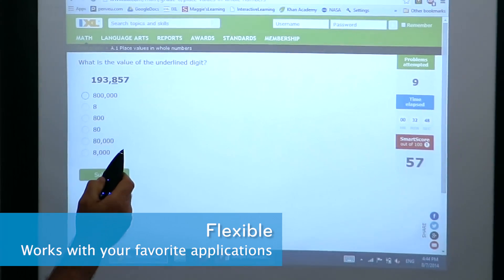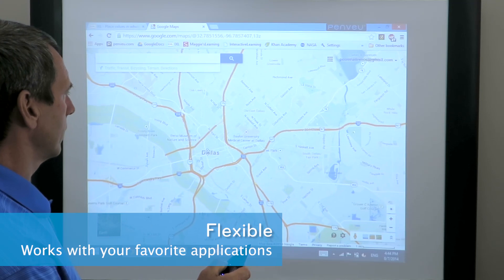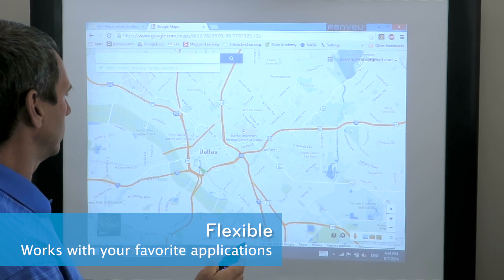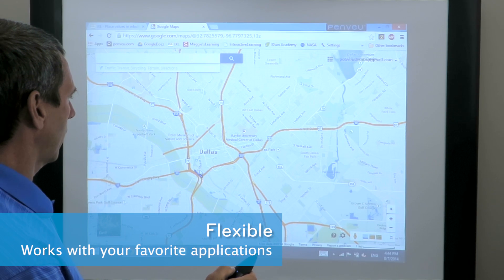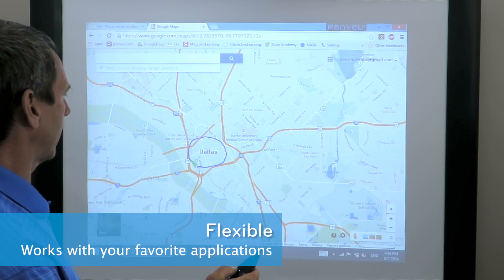Now we'll switch over to another application of Google Maps and show that we can move the map with the mouse. And we'll switch over to our pen mode. And we'll circle Dallas. And we can also highlight it.